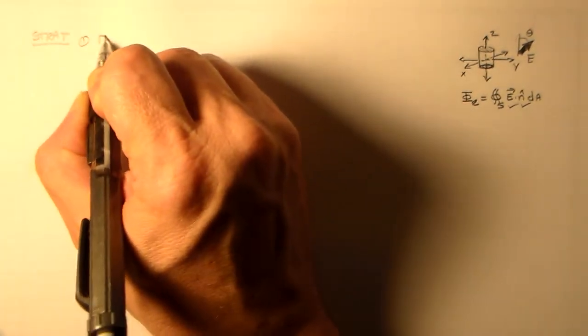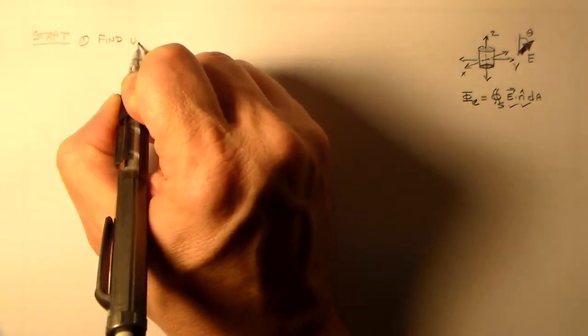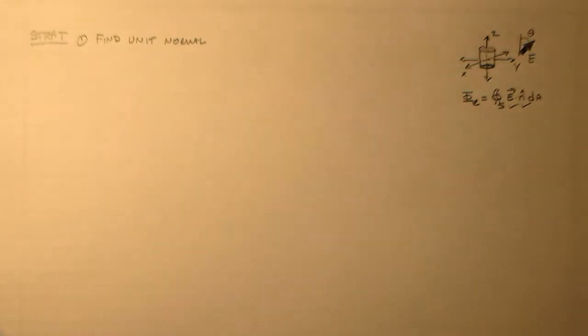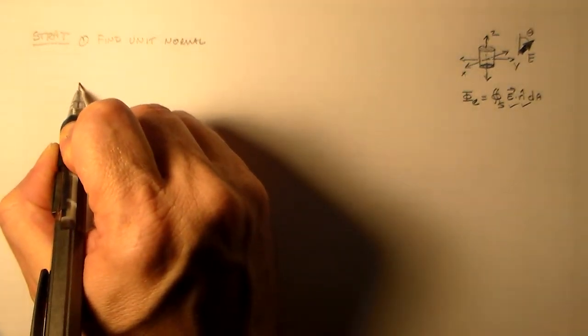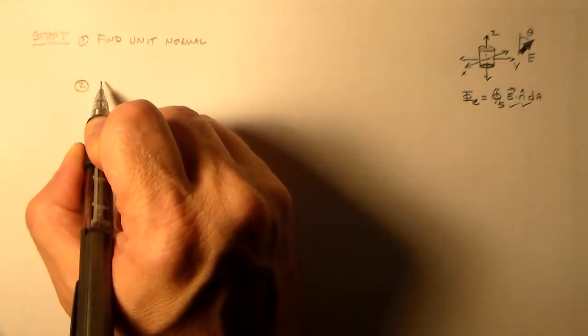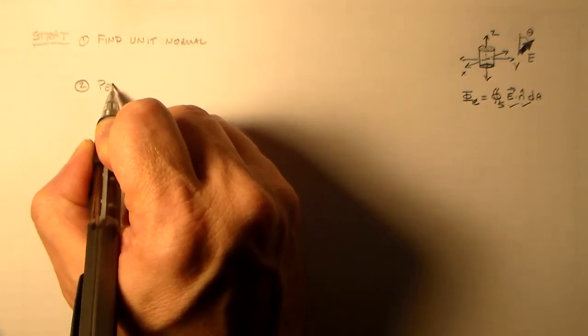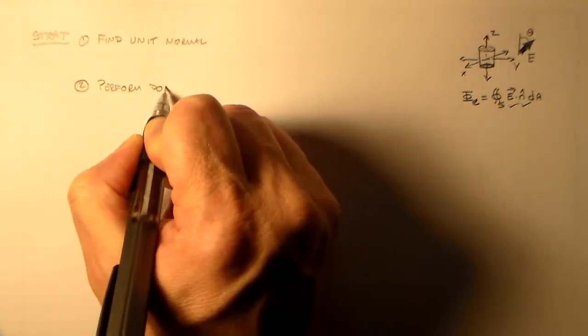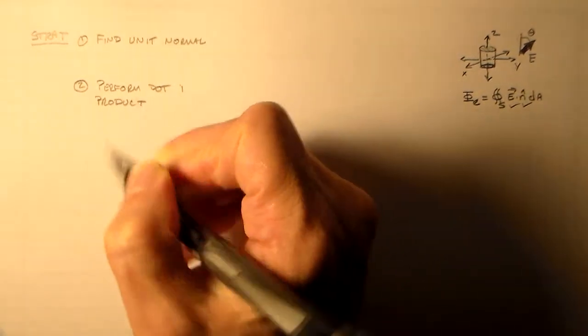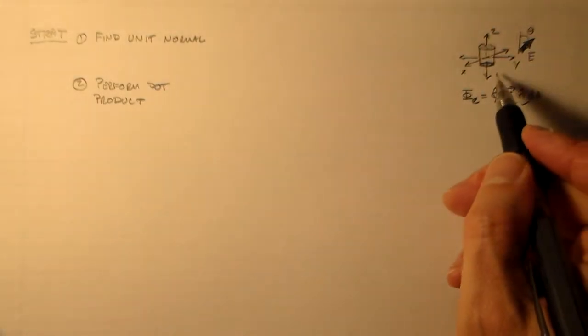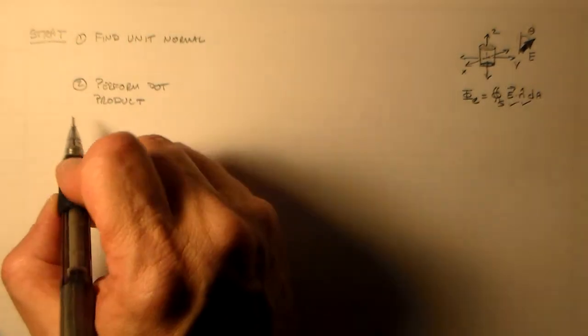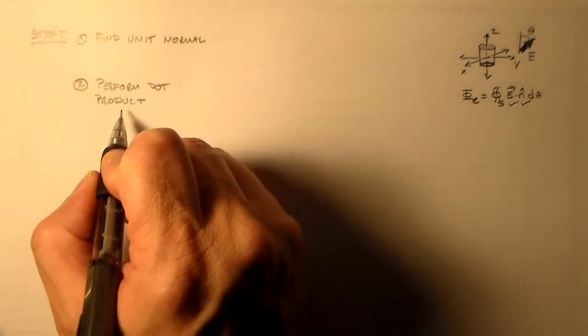So first, we need to find the unit normals, and that's not going to prove to be a great challenge in this case. Two, we need to perform the dot product. Because it turns out we already know what e is, it's right up there. We wrote it down as a vector in the previous doohickey.